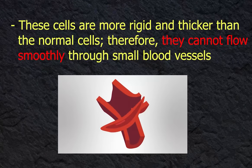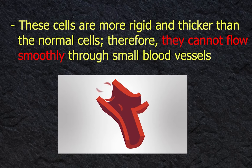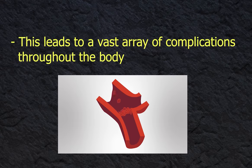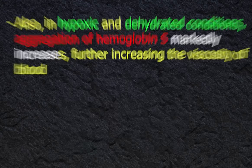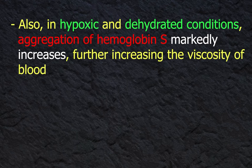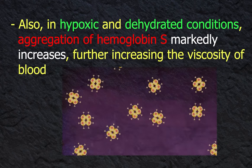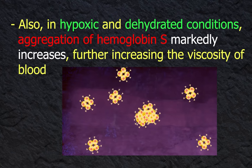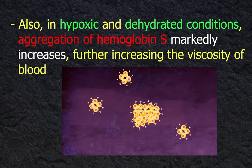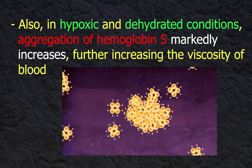These cells are more rigid and thicker than normal cells; therefore they cannot flow smoothly through small blood vessels, leading to a vast array of complications throughout the body. Also, in hypoxic and dehydrated conditions, aggregation of hemoglobin is markedly increased, further increasing the viscosity of blood.